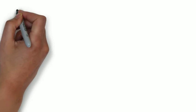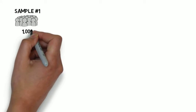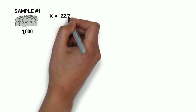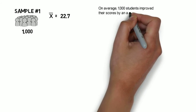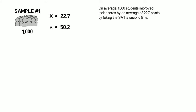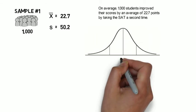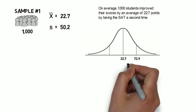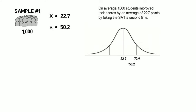Let's say in our first sample, we measure changes of test scores and find the average increase was 22.7. And the standard deviation for this group was 50.2. That looks like this on a graph. Our mean is 22.7. And if we go up one standard deviation, we get to 72.9. That's 50.2 points higher than our mean.